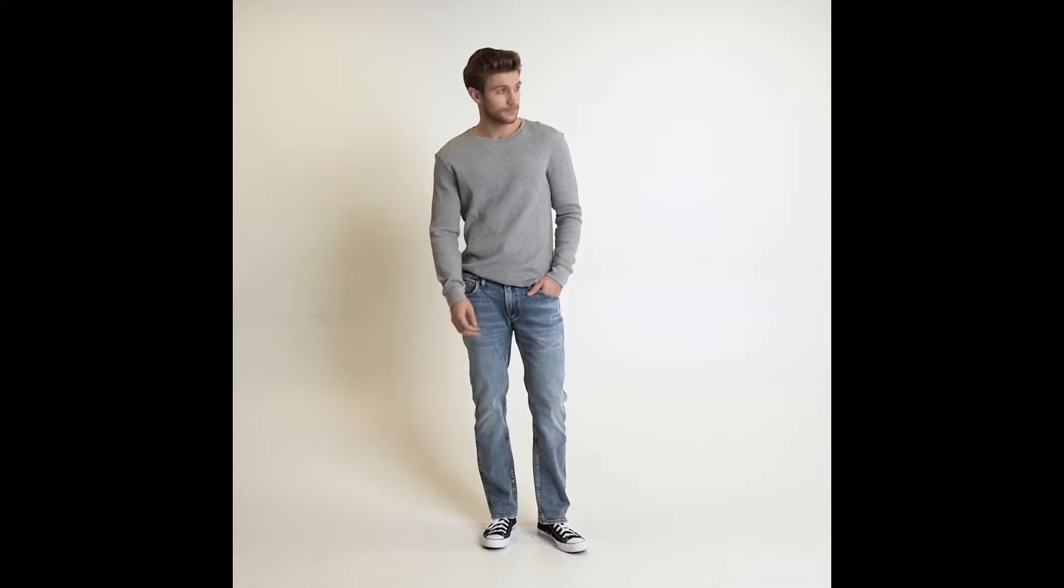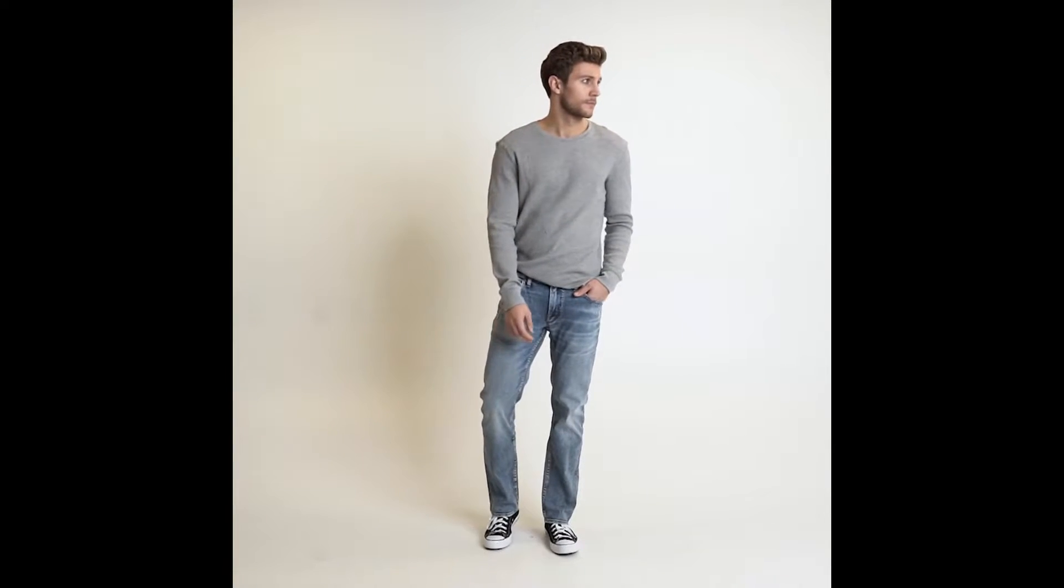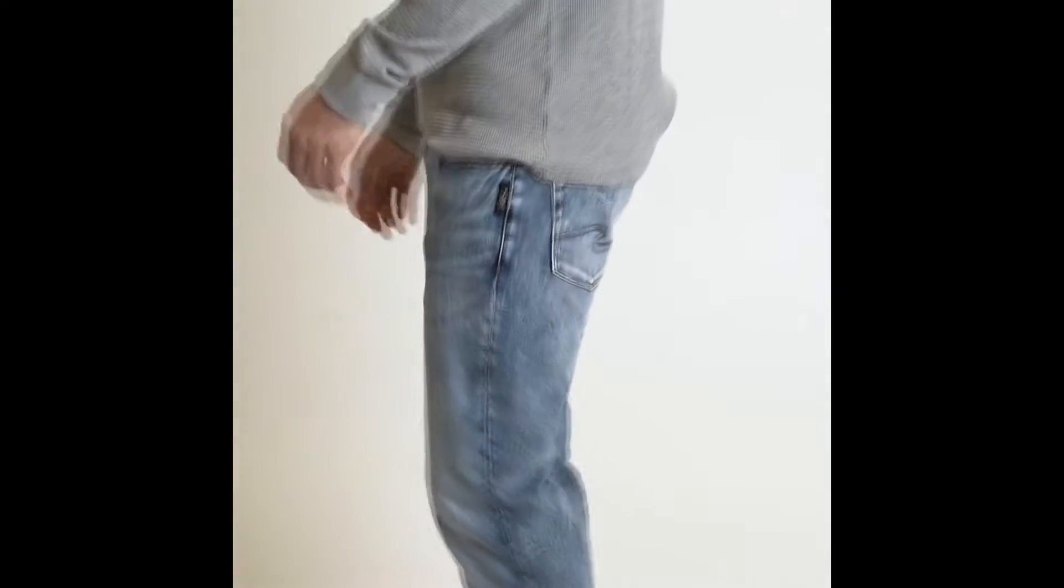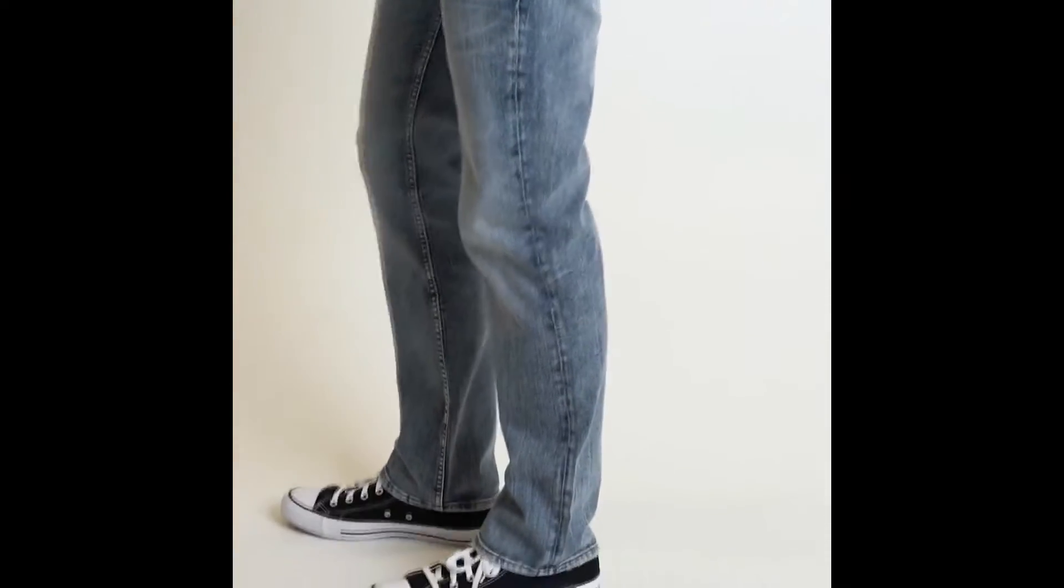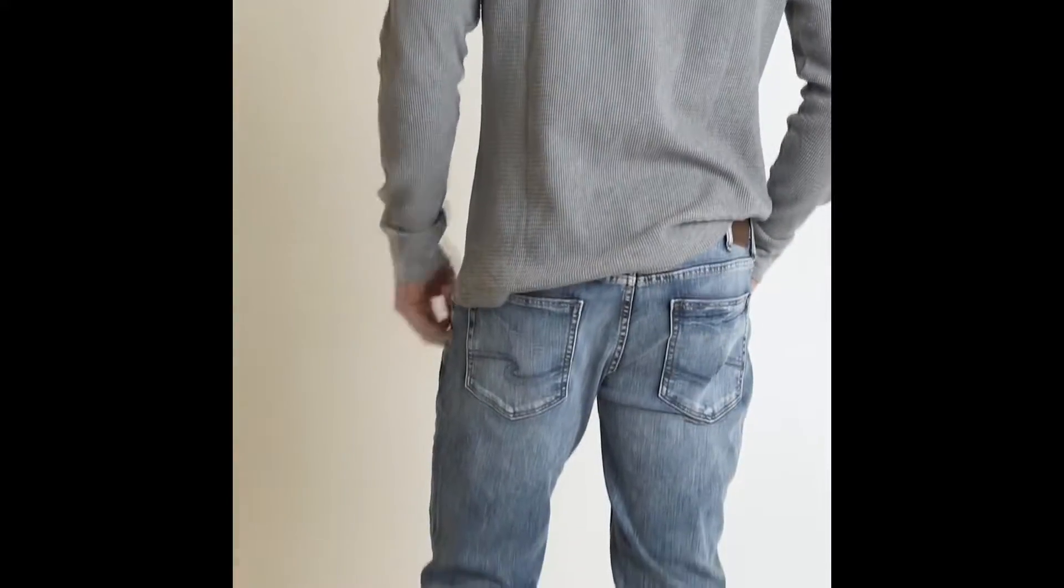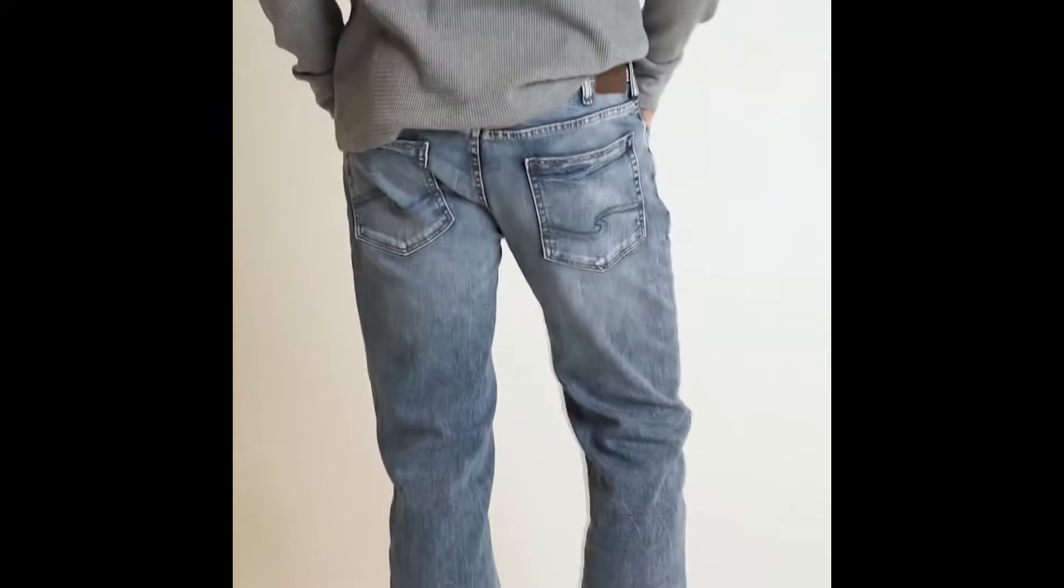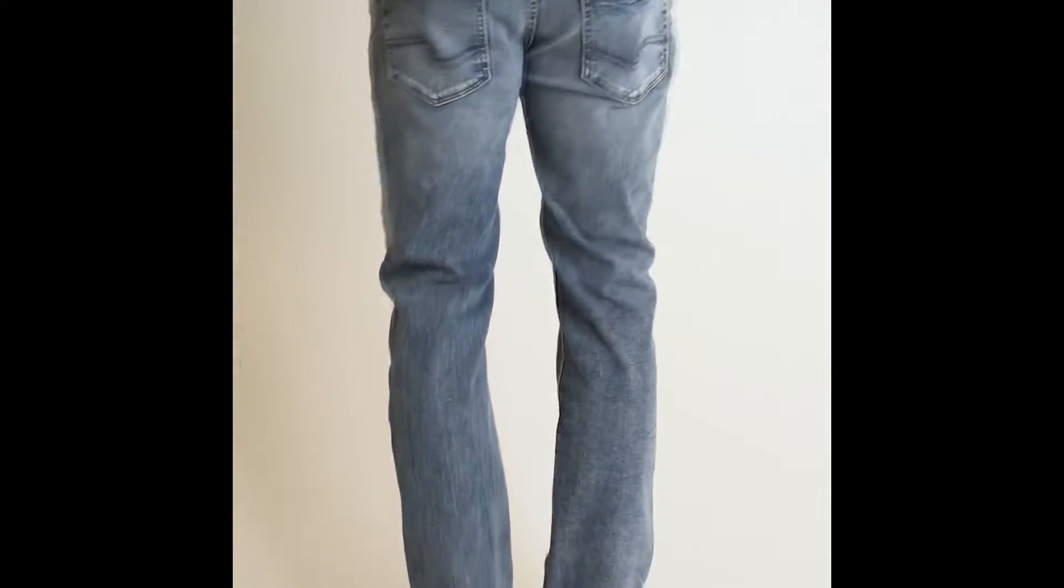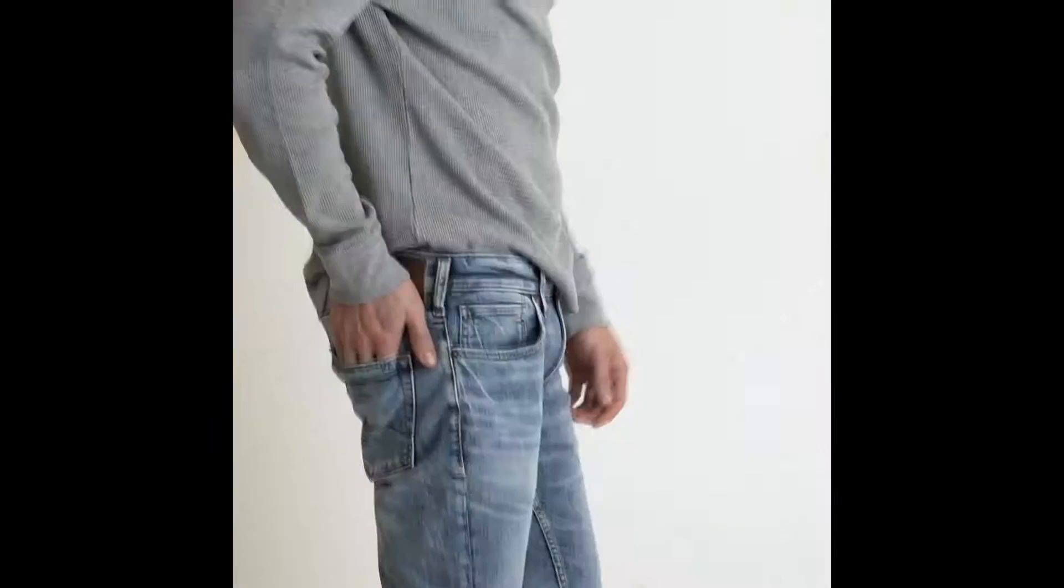We go into, next, our Allen, which is going to sit right below the waist and is our classic fit. This is an EPX288 wash. It's a really nice classic mid-wash. We have all over sanding with a bit of crocking to give depth.